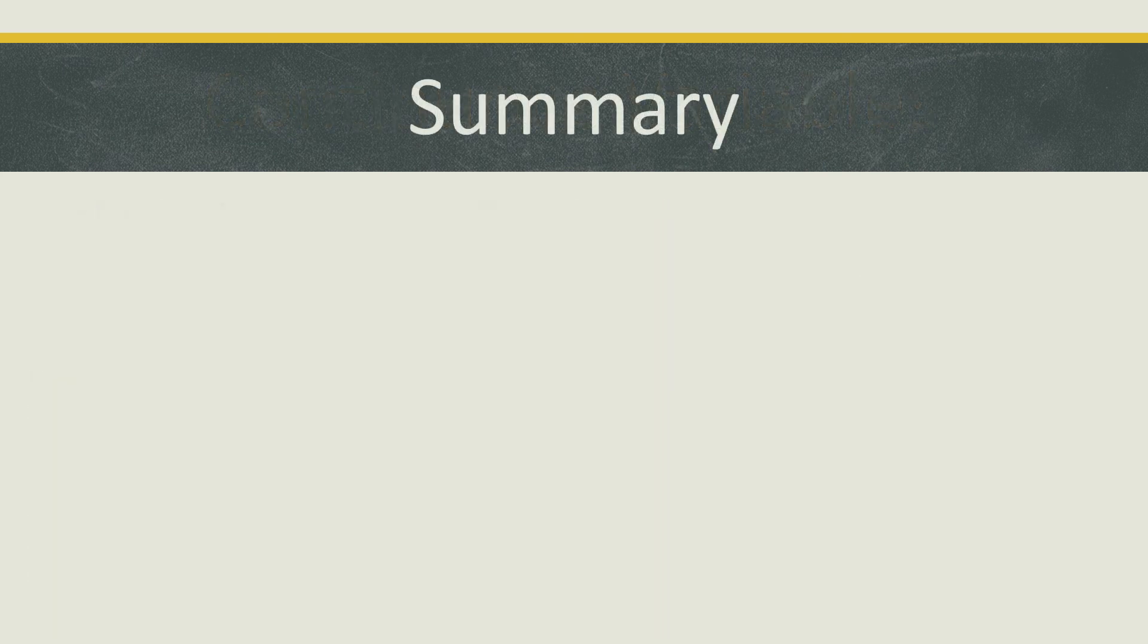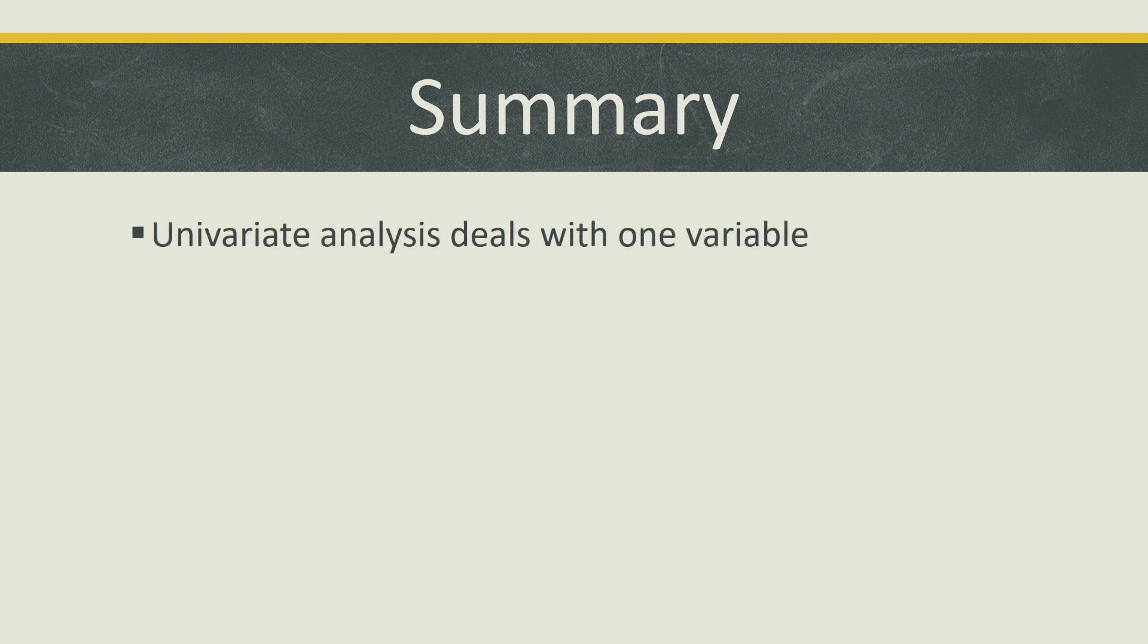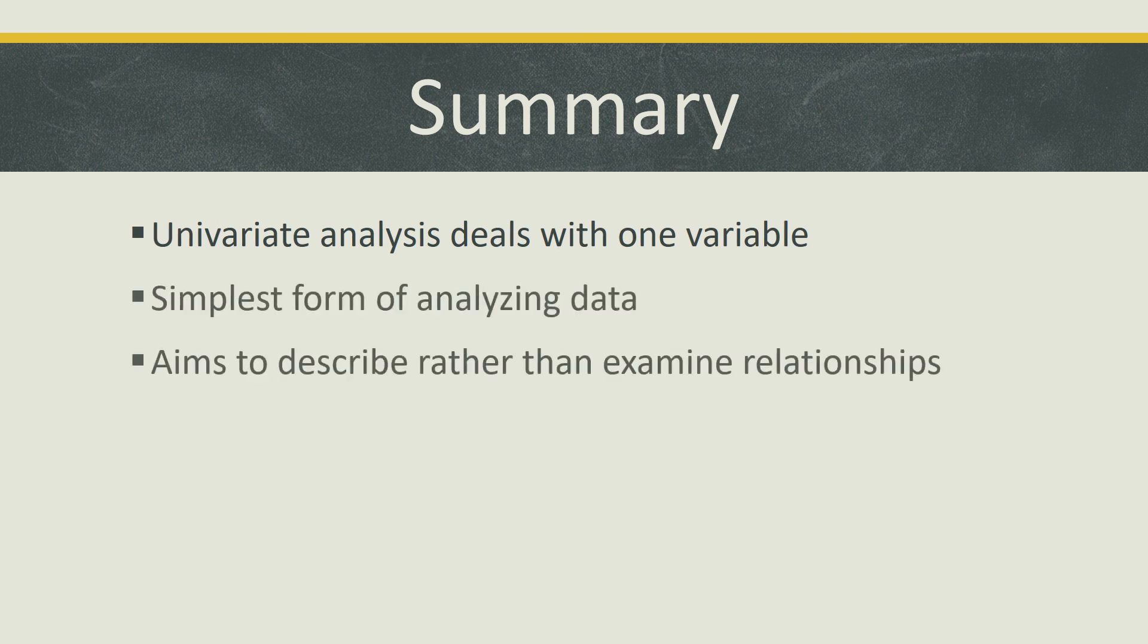Now that we've touched on the different types of variables used in univariate analysis, let's summarize what we've learned. Univariate analysis is only one of many different ways to analyze data and involves datasets with only one variable. It essentially is the simplest form of analyzing data and is used to describe data rather than look at causes or relationships.